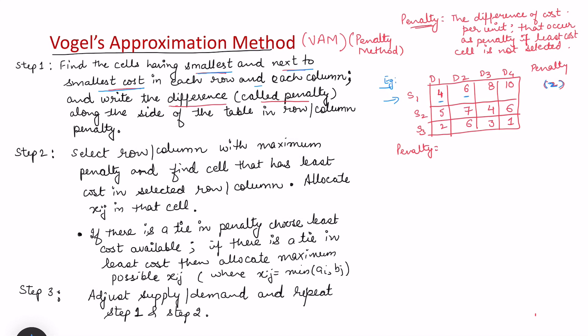The difference between these two is 2. So if by chance we do not do the allocation in the least cost cell — say we want to allocate in the cell with cost 4 but skip it — then we allocate in the cell with cost 6. This means every unit allocated will cost 2 rupees extra. Similarly, for S2, the least is 4 and the next least is 5, so the difference is 1 — that's the extra cost borne by not allocating at the smallest cost.